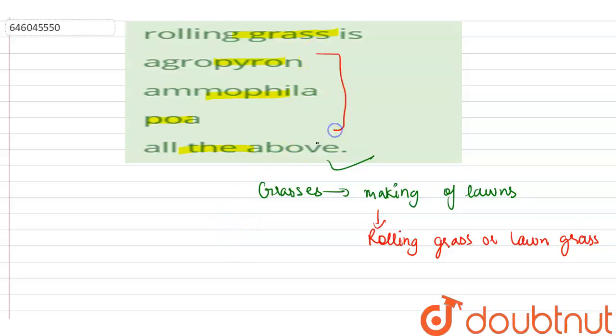So that is why the correct option here is all the above, as these are used in making lawns. Agropyron, ammophila, and poa are called rolling grasses.